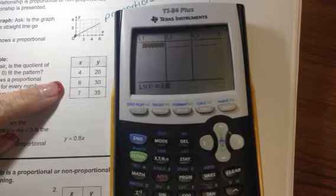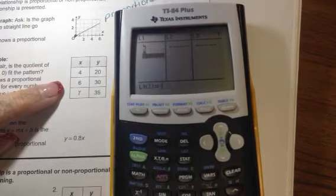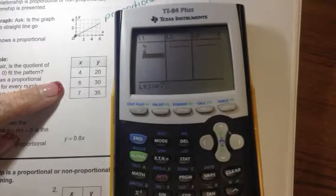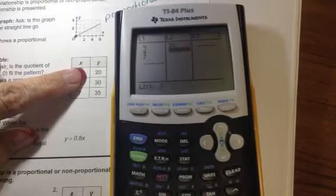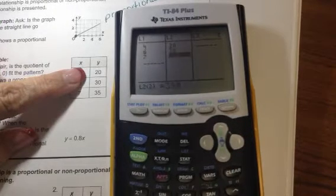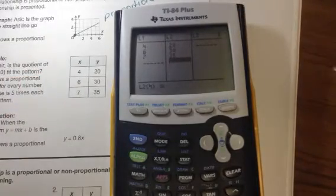Remember, we hit stat, and then we hit edit. We are going to go through, and we're going to delete these numbers that are in here. I'm going to delete. And I'm going to put the numbers that are in this graph. Okay? Or in this table, sorry. I've got a 4, a 6, and a 7. Let's try to put the right numbers in. Okay? Then I'm going to move over, and I'm going to put in a 20, a 30, and a 35. Remember, L1 is my X. L2 is my Y.